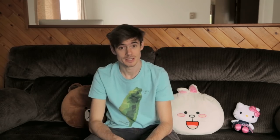But let's say I've made up my mind and I'm going to drink the tea. I would say 我要找个茶馆 — 'I want to find a tea house.' And remember, with 要, you're going to follow through. It's like 'I want to do this and I'm going to follow through and do it.'